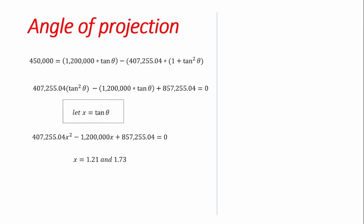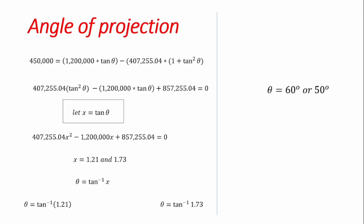Since x = tanθ, we find theta as arctan(x). The two values obtained give arctan(1.21) and arctan(1.73), yielding theta values of approximately 50° and 60°. These are the two angles at which the missile could be projected from the ground to hit the target.